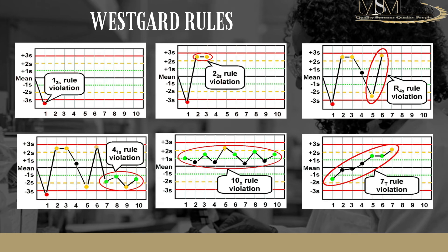This slide provides a graphic representation of all the rules discussed. The 1-3s rule: one point outside the 3s limit is a violation. The 2-2s rule: two points between two and three standard deviations. The R4s rule: one point at plus 2s and another at minus 2s — four standard deviations apart. Then the 4-1s rule with four consecutive points on the same side, and the 10x rule with ten consecutive points on the same side of the mean.